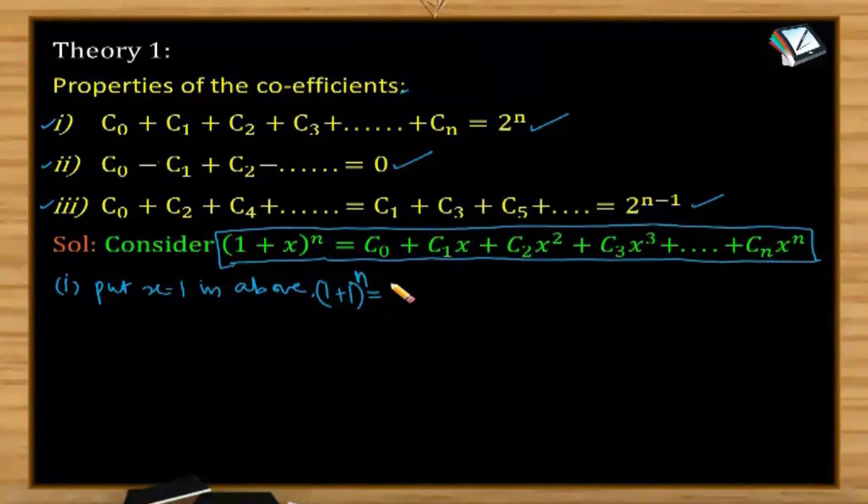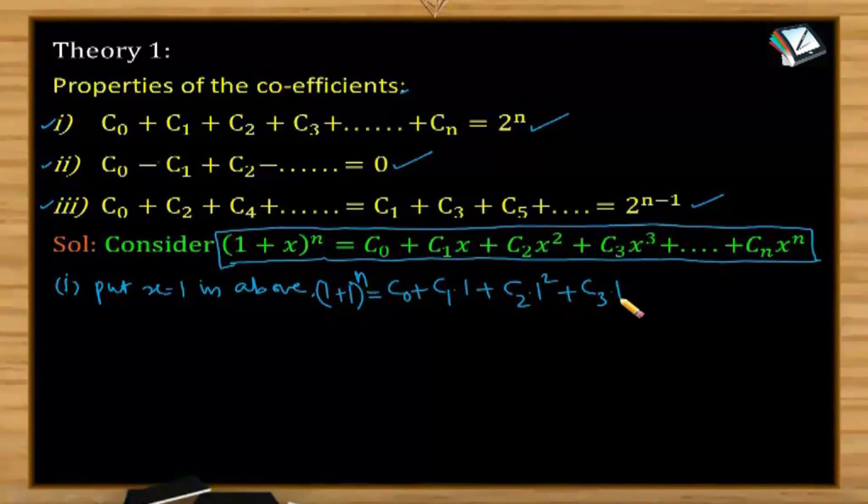This equals C0 plus C1 into 1 plus C2 into 1 square plus C3 into 1 cube plus so on, Cn into 1 to the power of n.